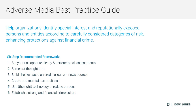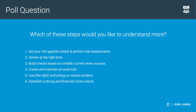We have the second poll coming up for you. The question is: which of these steps would you like to understand more? There are five options: set your risk appetite clearly and perform risk assessment; screen at the right time; build checks based on credible current news sources; create and maintain an audit trail; and use the right technology to reduce burdens. And finally, establish a strong anti-financial crime culture. I'll wait about 30 seconds as we get the results.